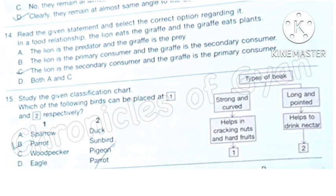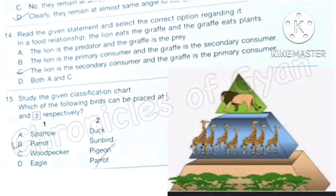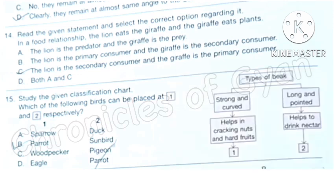Question 14: Read the given statement and select the correct option regarding it. In a food relationship, the lion eats the giraffe and the giraffe eats plants. Option A: The lion is the predator and the giraffe is the prey. This is correct relationship. Option B: The lion is the primary consumer and the giraffe is the secondary consumer. No, this is incorrect. Option C: The lion is the secondary consumer and the giraffe is the primary consumer. This statement is correct. Option D, both A and C are correct statements, so option D is the correct answer.